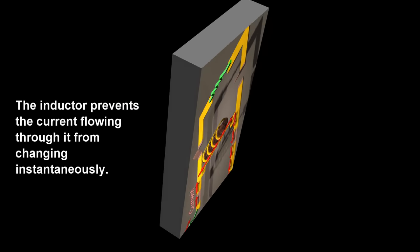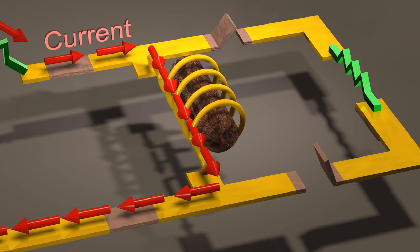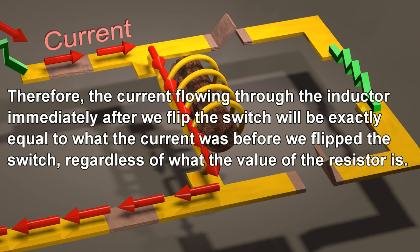The inductor prevents the current flowing through it from changing instantaneously. Therefore, the current flowing through the inductor immediately after we flipped the switch will be exactly equal to what the current was before we flipped the switch, regardless of what the value of the resistor is.